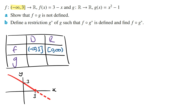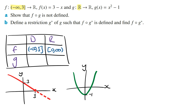g of x is a parabola shifted one unit down. The domain of g is all real numbers. Sketching g of x, we can see that the range will be from minus 1 to infinity. Writing this in the table, the domain of g is all real numbers and the range is from minus 1 to infinity.